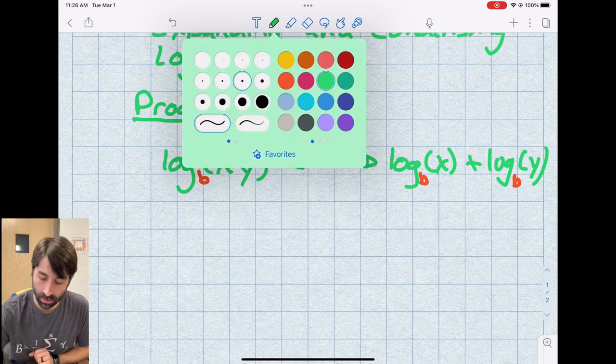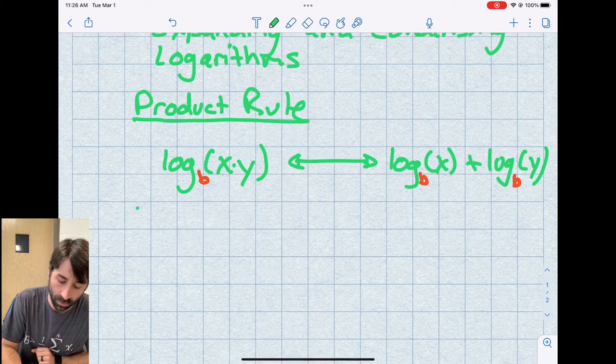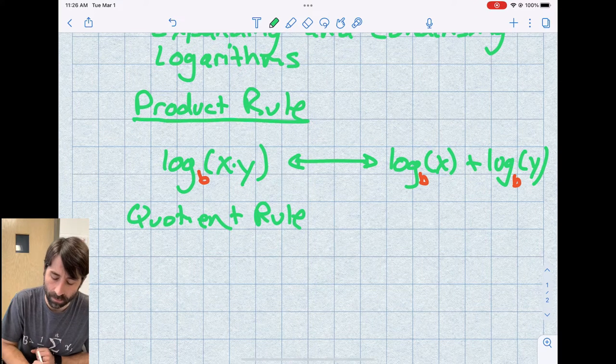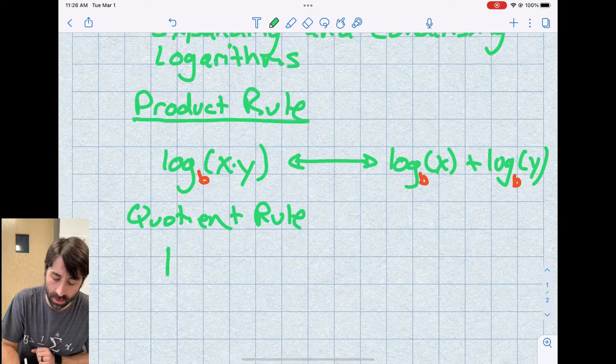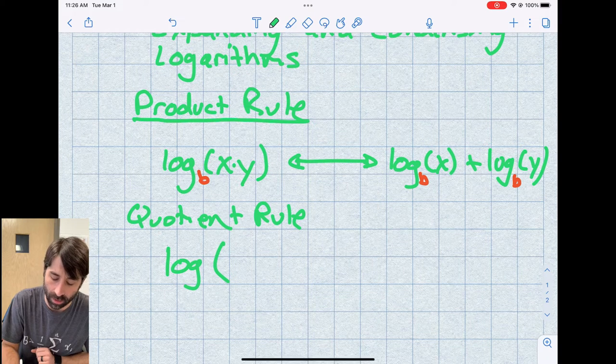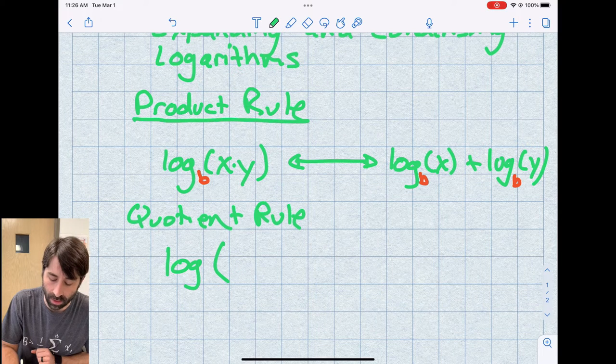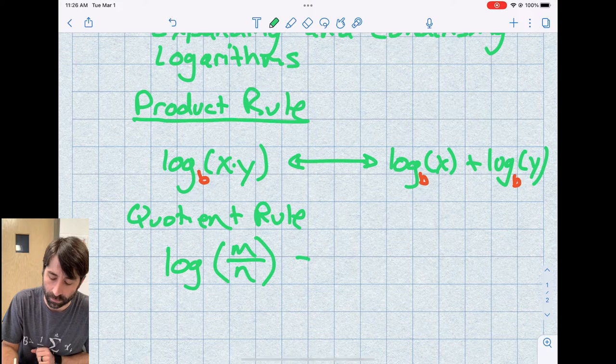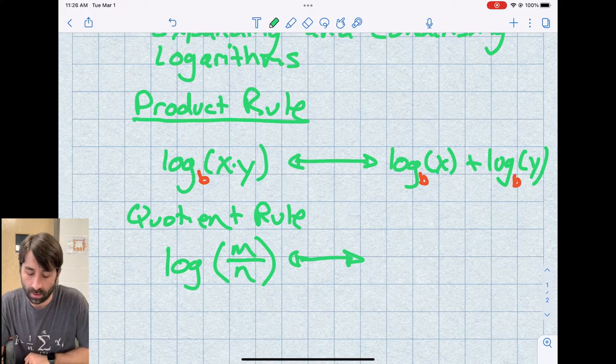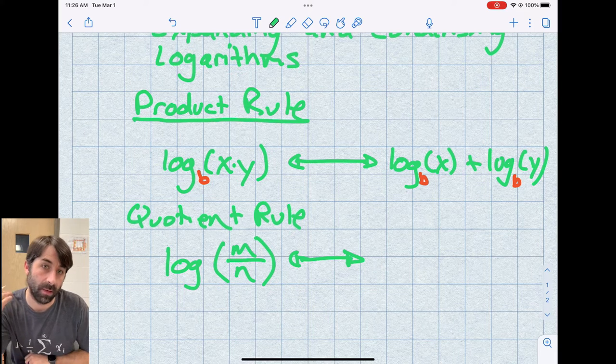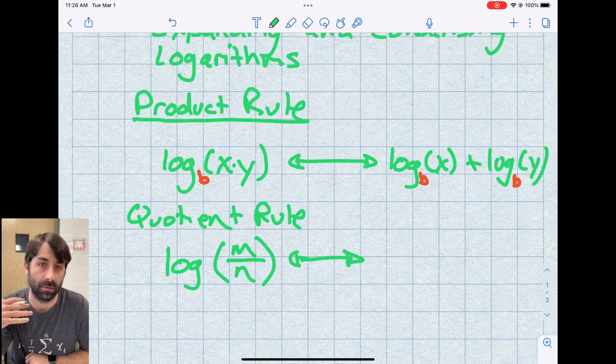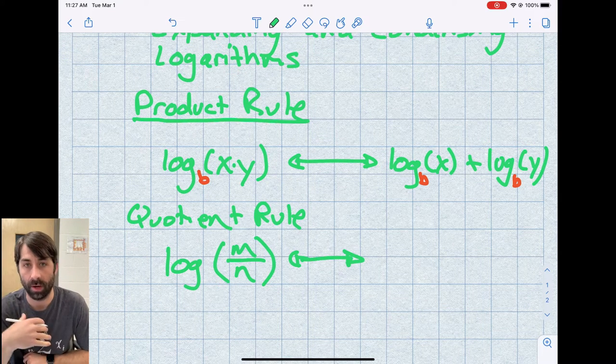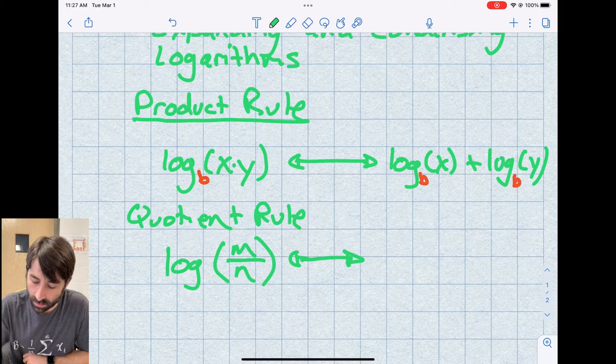The next rule is the quotient rule. And the quotient rule says if we have the log of a division problem, let's say log of m divided by n, we can expand that. And this time the divisor, we end up subtracting the log of the divisor from the log of the quotient. So it's related to the product rule. The product turns into a sum and division turns into subtraction.